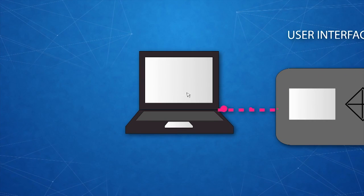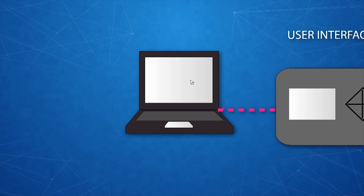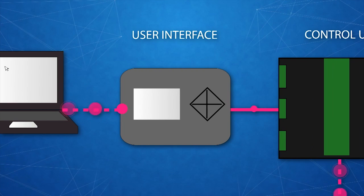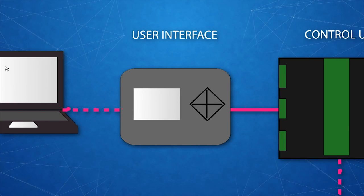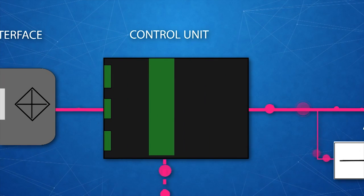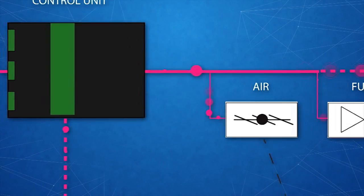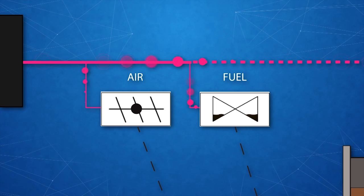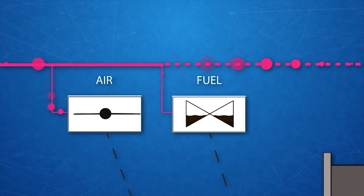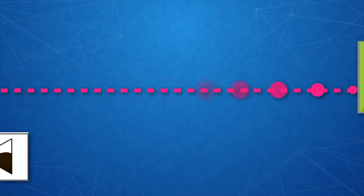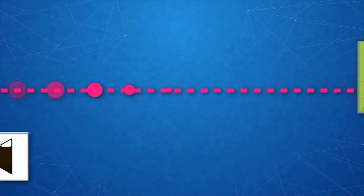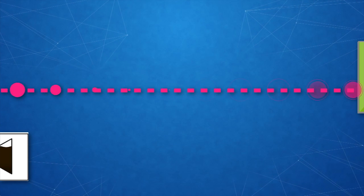Site personnel monitor system operations on a computer screen. The control panel is the user interface for the system, and the control unit operates the burner. The servo motors operate and control air flow and fuel flow. The bus cable transmits information between system units and to and from the control panel.